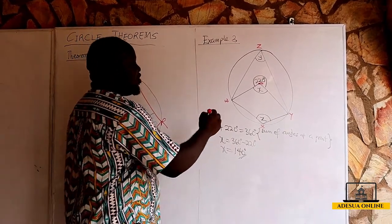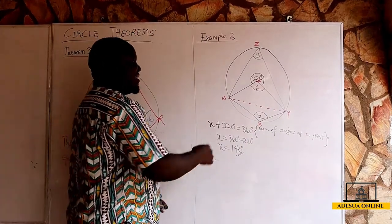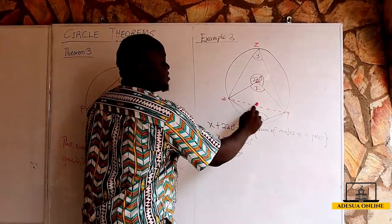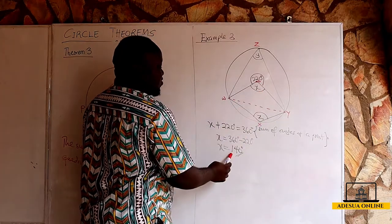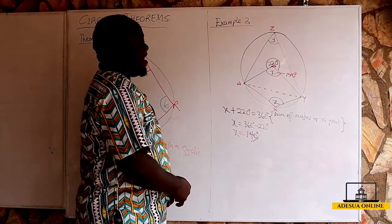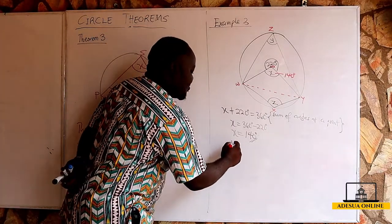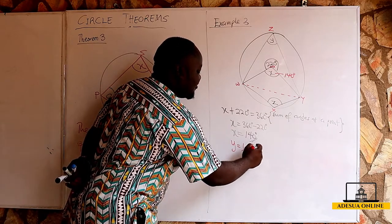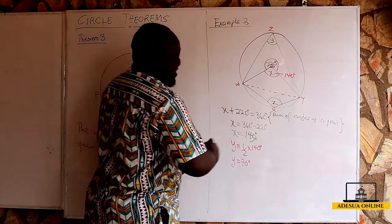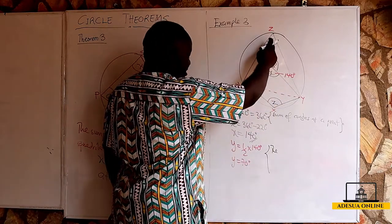Now WY is an imaginary chord that sustains an angle at the center and also an angle at the circumference. The angle it sustains at the center is X, which is 140 degrees. From Theorem 1, the angle at the center is twice the angle at the circumference, so Y equals half of 140 degrees. Therefore Y equals 70 degrees.